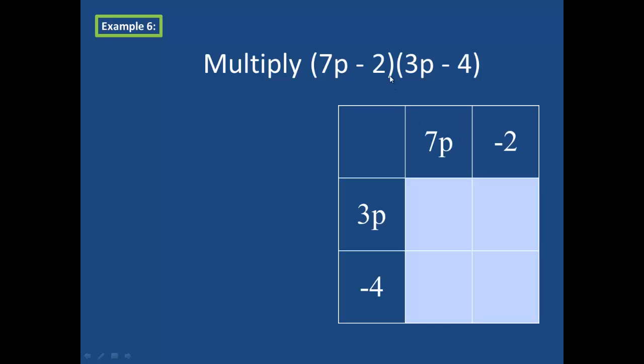If I use a box, I might take the first polynomial and put it across the top, 7p minus 2, and the second polynomial 3p minus 4 down the side. So remember, if I distribute, I'm going to take this first term 7p and multiply by both terms in the second binomial. That's the same as my first term in FOIL.